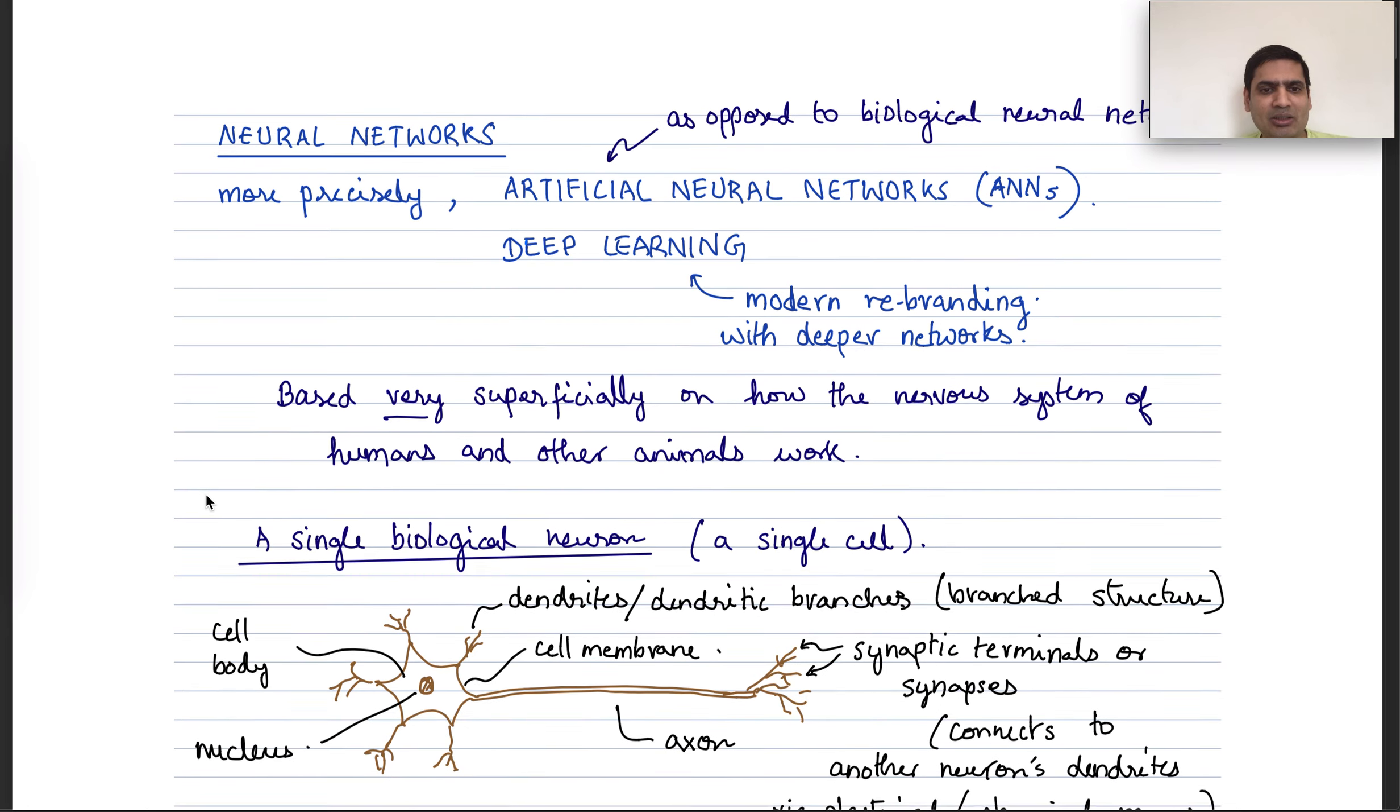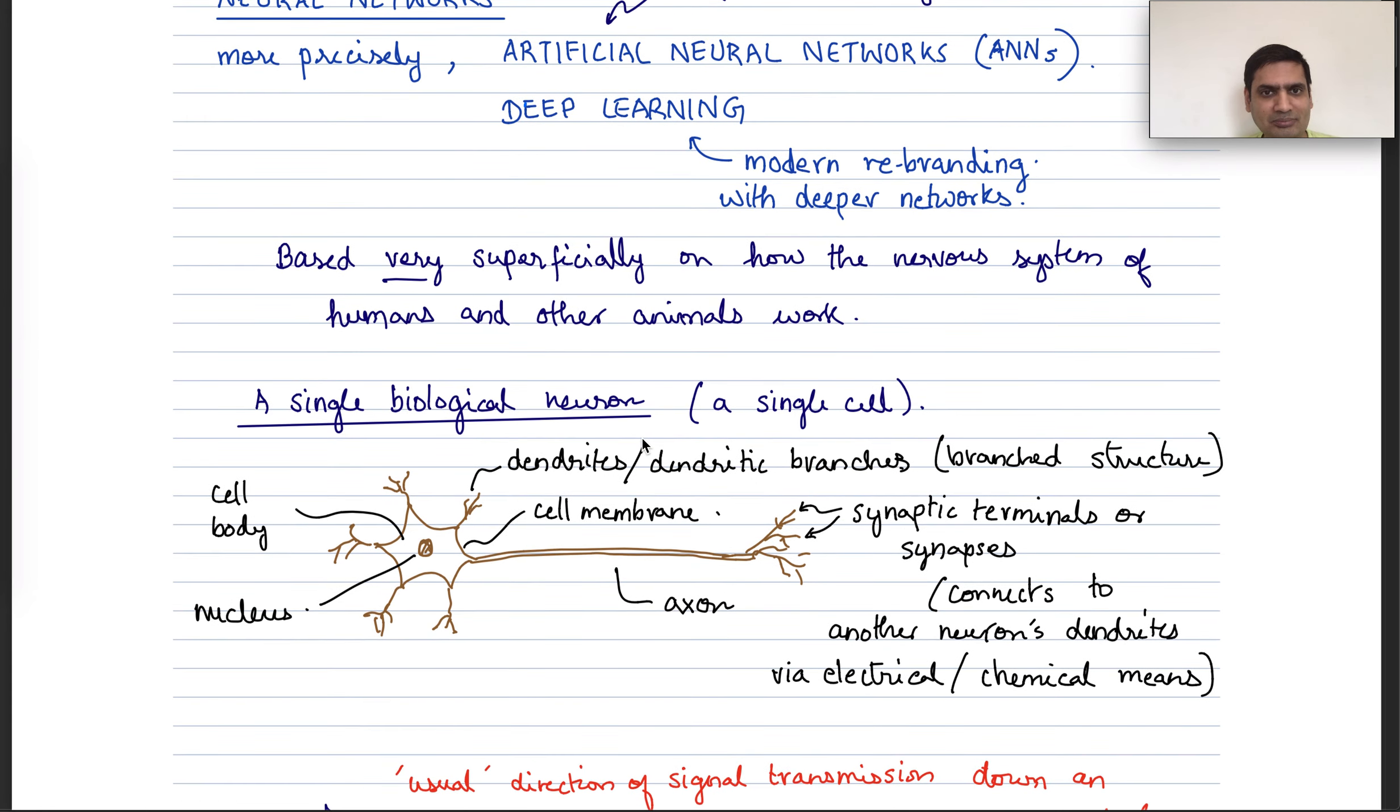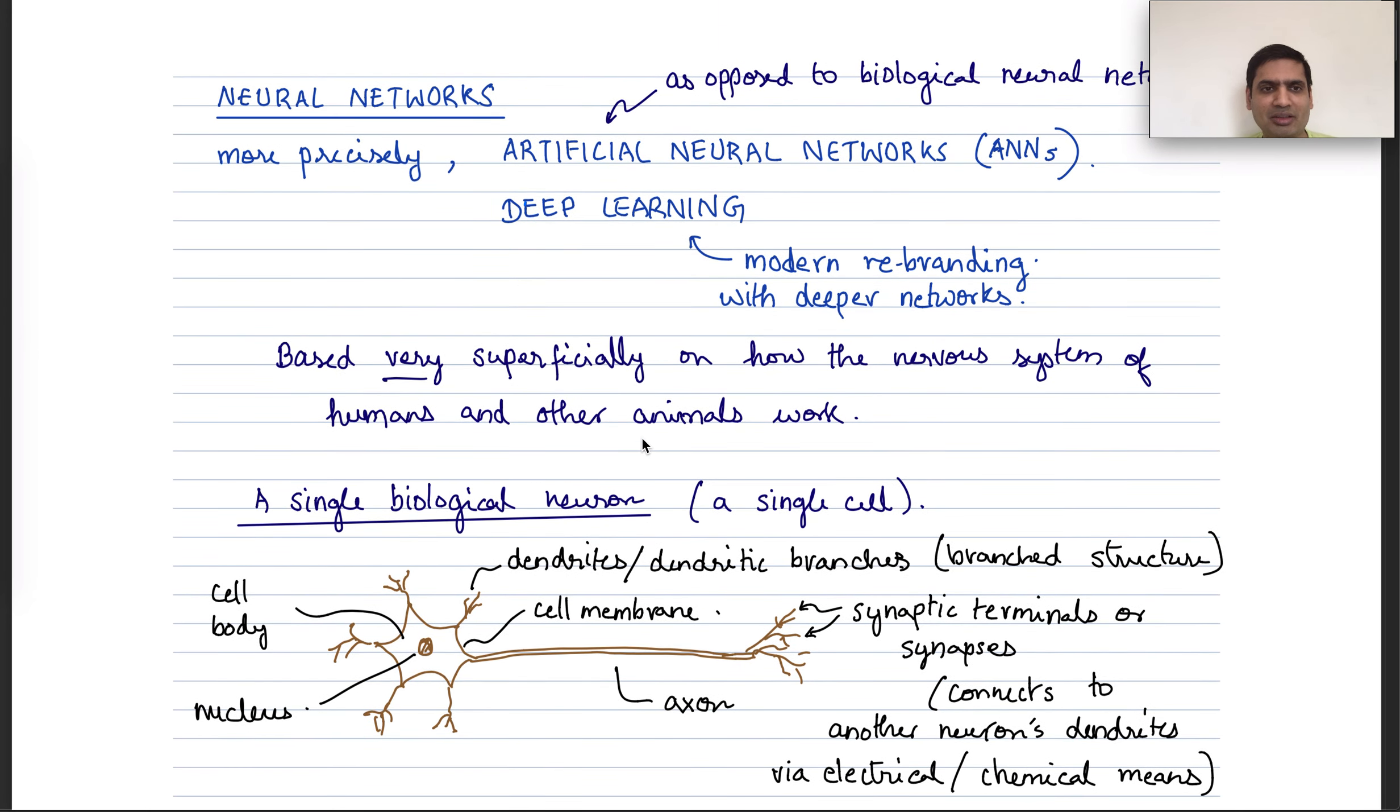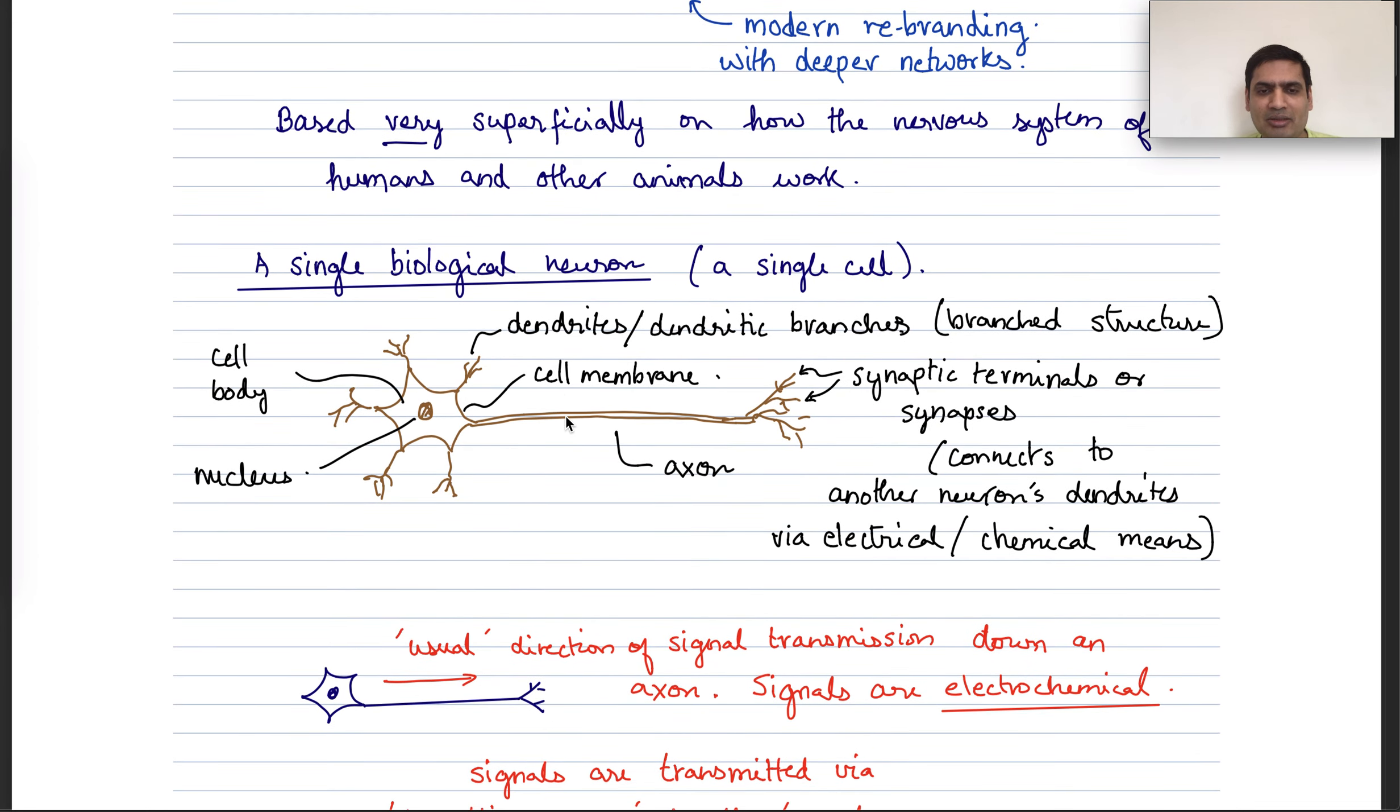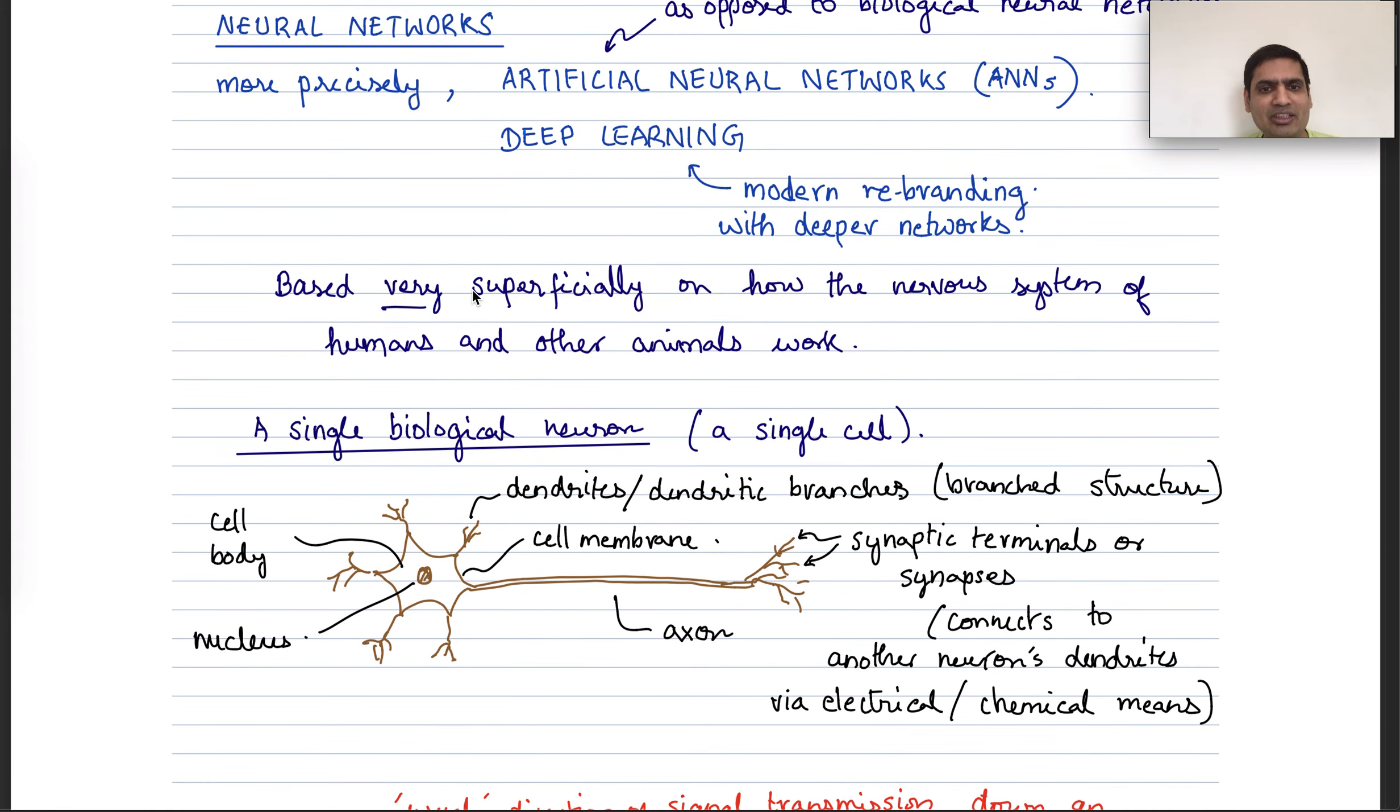Okay, so what are neural networks? They're, of course, based very superficially on how the nervous system of humans and other animals work. I'm sure you've all heard about these, because they're in the news a lot. So let's talk briefly about the nervous system of animals.